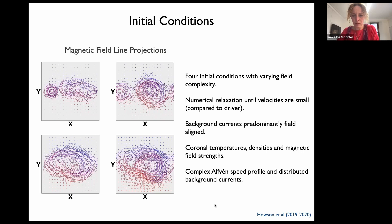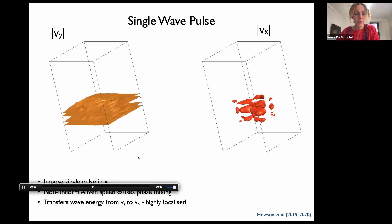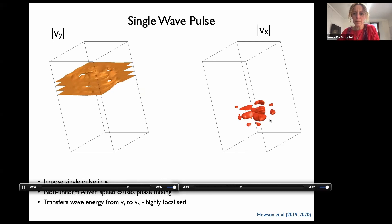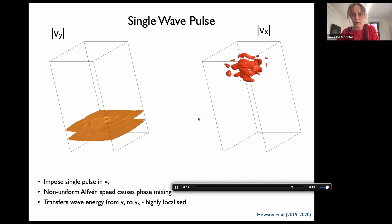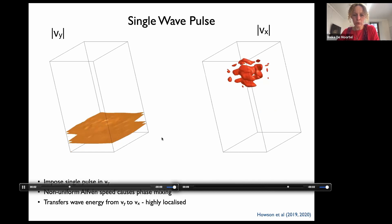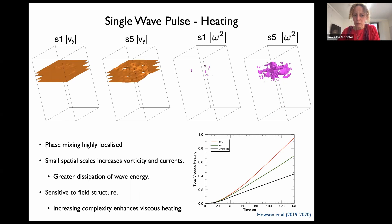We apply a simple transverse pulse at the bottom boundary. As this pulse propagates into the domain, we very quickly generate the other velocity components simply because of the non-uniform nature of the magnetic field — showing energy transfer from one velocity perturbation into the others in a highly localized way. Not surprisingly, the more complex you make the field, the more complexity and vorticity you find, giving an enhancement in viscous heating when viscosity is switched on.